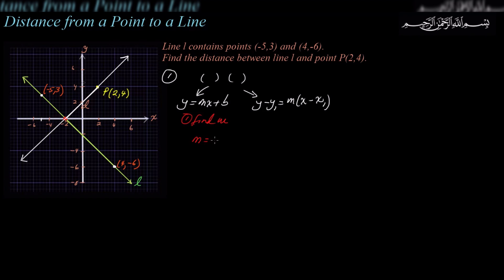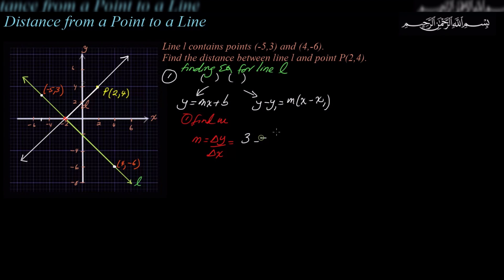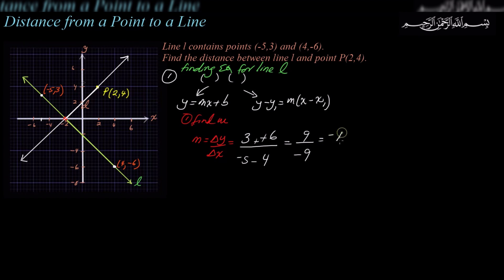First step: find M, the slope for line L. The slope is the change in y over the change in x. So that's 3 minus negative 6 over negative 5 minus 4 — that's 9 over negative 9, which gives us a slope of negative 1.